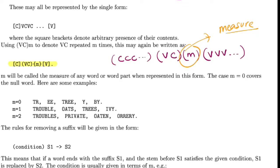The M that the authors define is called the measure of a word. M can take any integer value starting from zero. M is zero for all these examples because there is no combination of V followed by C that occurs in any of these examples.